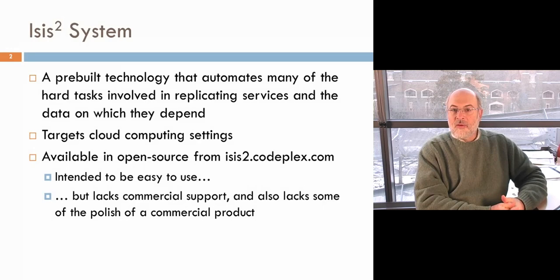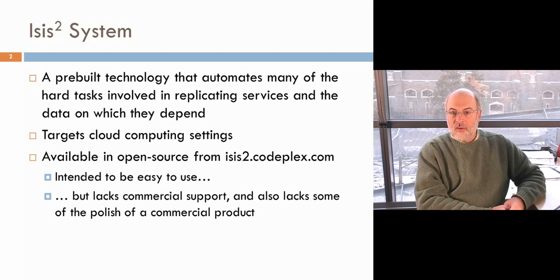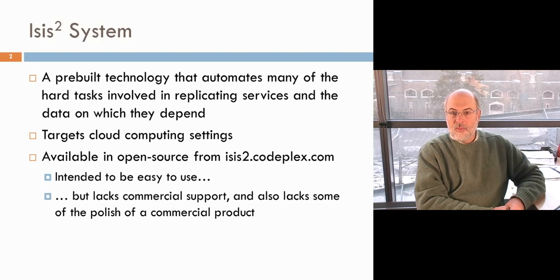The ICIS technology is the latest in a series of generations of high-assurance cloud computing systems built here at Cornell University. It's pre-built and takes the form of a library you link to a piece of software. There's also a second way of using ICIS through command line applications and a very thin library. You can download the ICIS system from ICIS2.codeplex.com, and if you make enhancements or fix bugs, we'll be happy to incorporate them back.